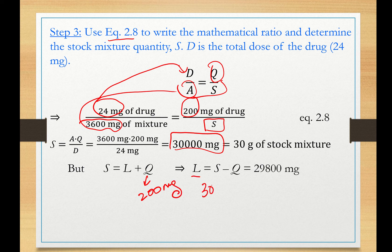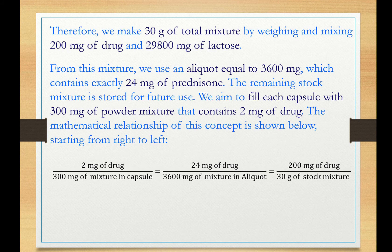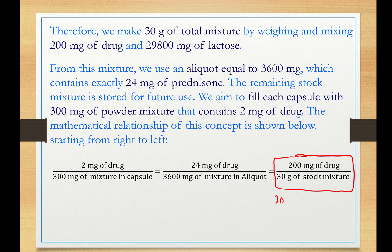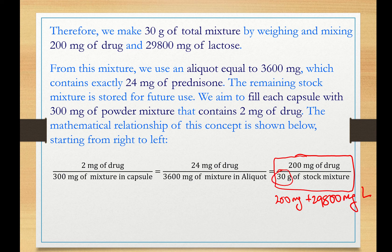The total powder mixture needed. So this is what we have here. We have 200 mg of drug and we mix it with 29,800 mg of lactose to make 30 grams of stock mixture.